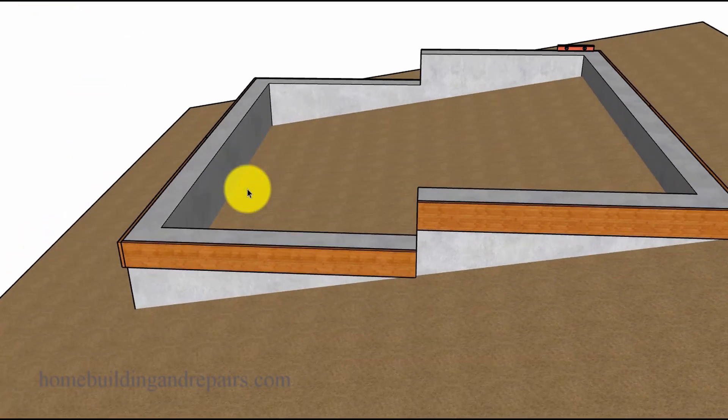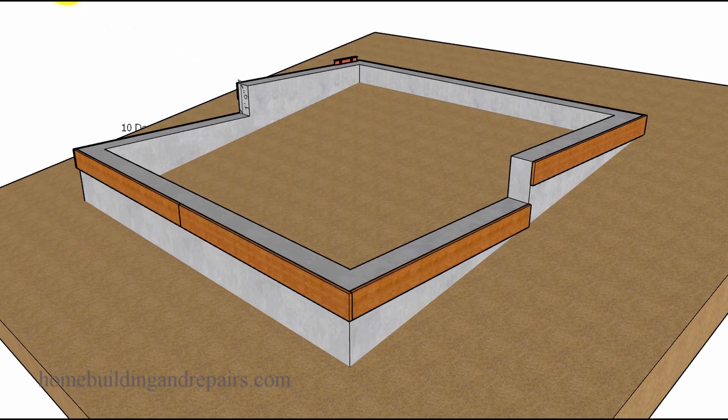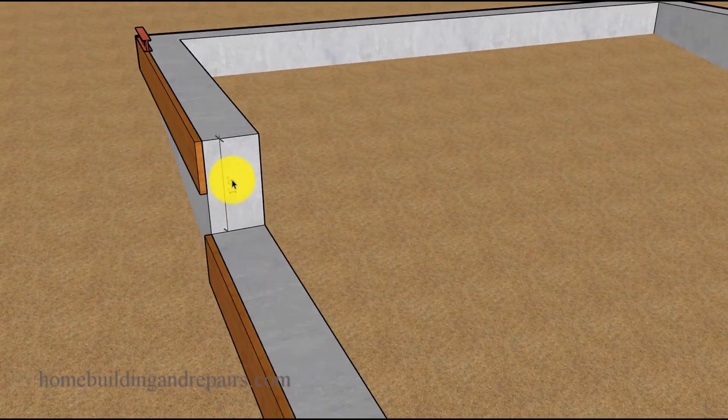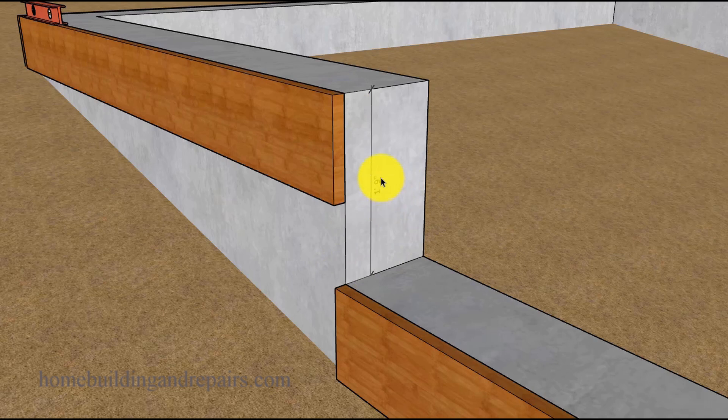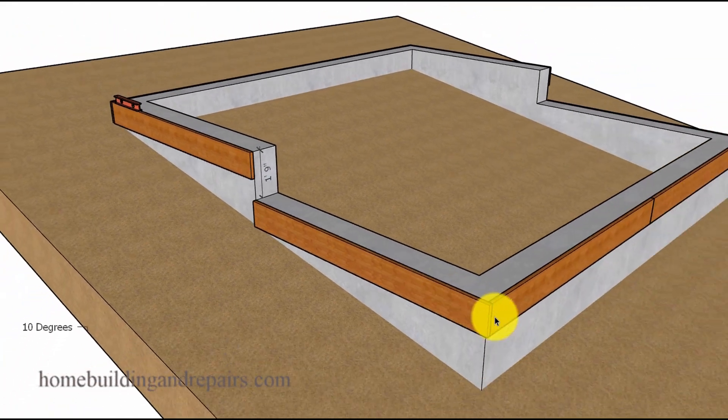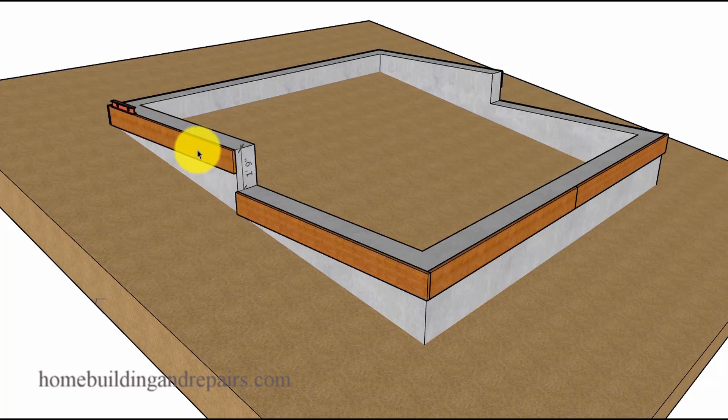Here's what it would look like on the foundation. This step down only has one section where we're stepping down, and the total height that we're stepping down is one foot nine inches. However, if we only step this down once, we're still going to be pouring a lot of concrete that we might not need to.